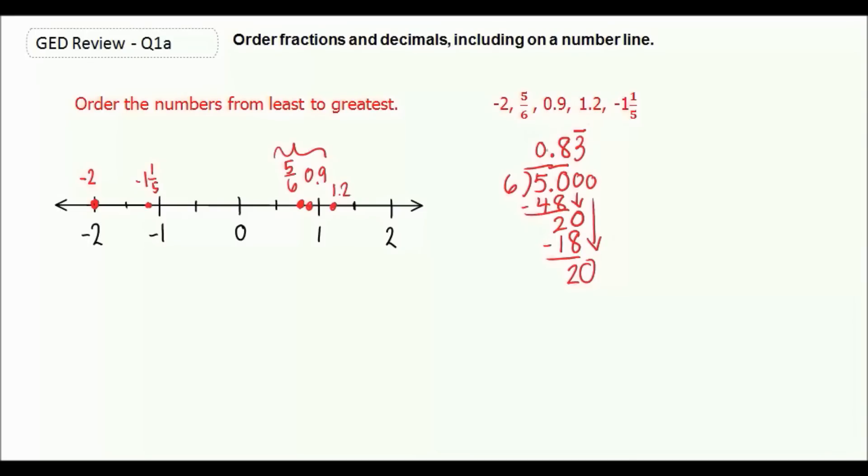So comparing 0.9 and 0.83 repeating, this would come first, which means 5/6 is smaller than 0.9.